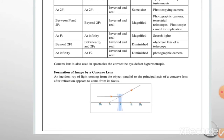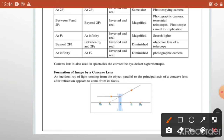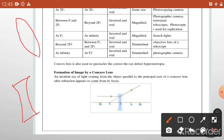Today I am going to explain formation of image by a concave lens. आप ये देखिए कि concave lens को हम किस तरीके से बनाते हैं - इस तरीके से formation करना होगा. और convex को हम इस तरीके से show करते हैं. Starting में यह दिया है: an incidence ray of light coming from the object parallel to the principal axis of a concave lens, after refraction, appeared to come from its focus.